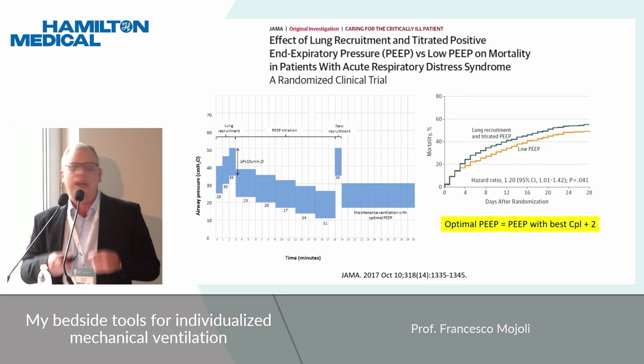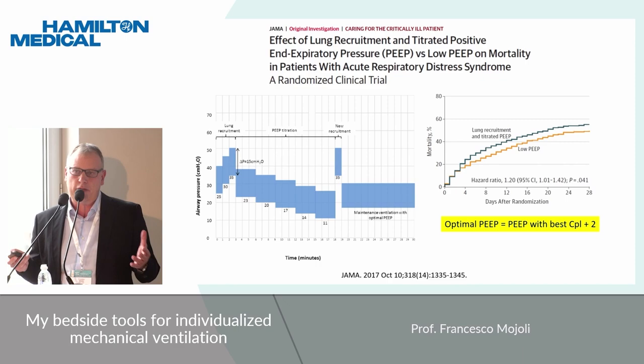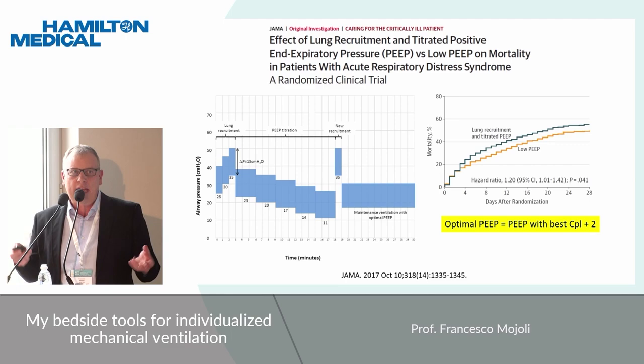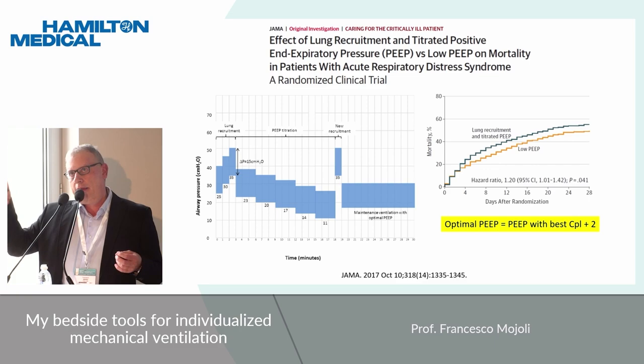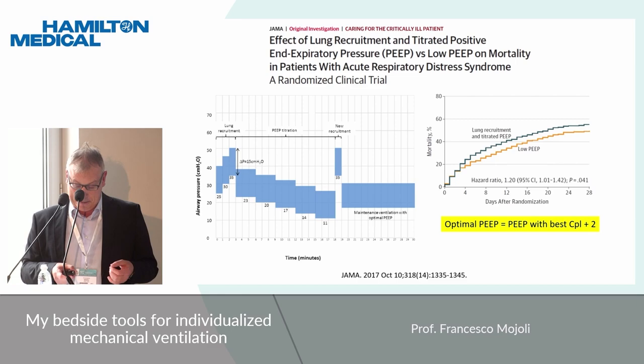Another option is to test different levels of PIP during a decremental PIP trial and select the PIP value according to respiratory mechanics, usually according to the best compliance. Why? Because this level of PIP seems to be associated with the best combination of overdistension and de-recruitment. Very good idea — but we know that a large trial failed to demonstrate a clinical advantage with such a strategy.